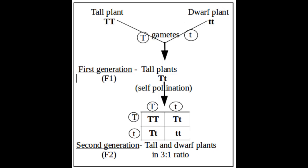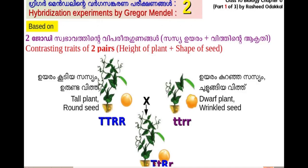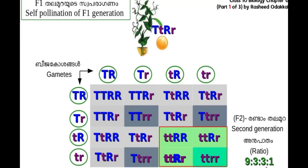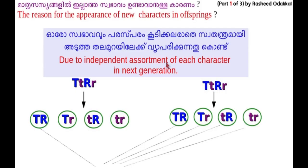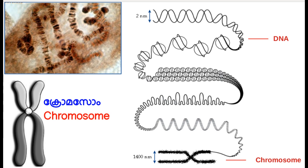He assumed that during gamete formation, the factors that determine a particular character segregate without getting mixed. When he conducted experiments considering two pairs of contrasting traits, the ratio in the second generation appeared as 9:3:3:1. Mendel explained that the appearance of variation in offsprings is due to the independent assortment of each character. It was found that the carriers of heredity, which Mendel described as factors, were the genes present in DNA.